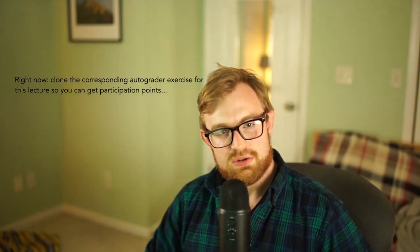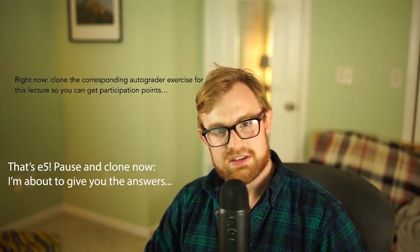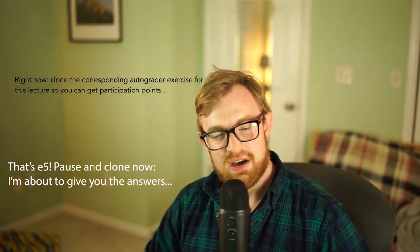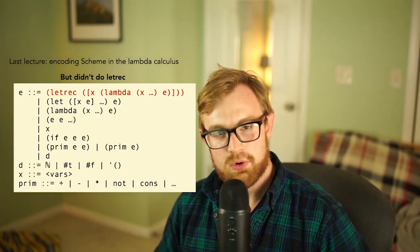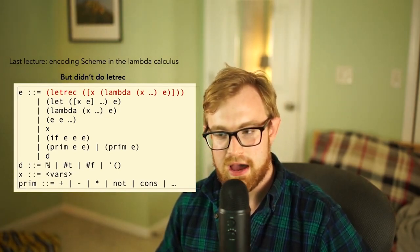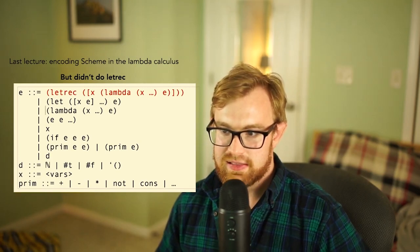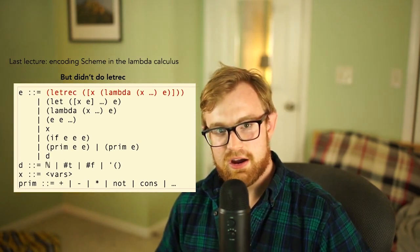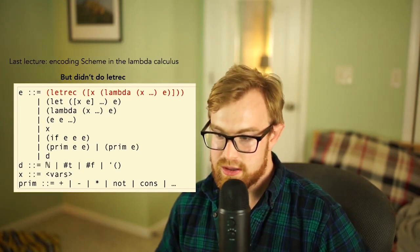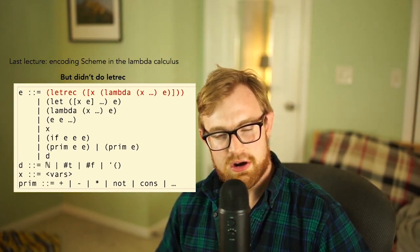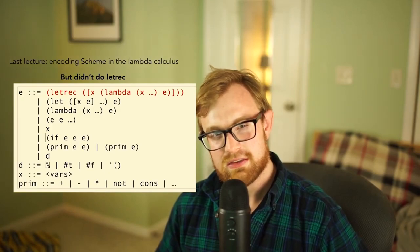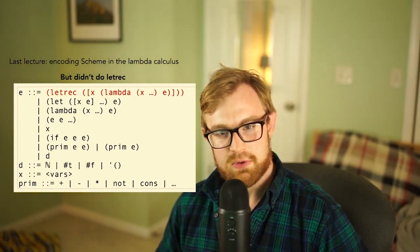You should pull the corresponding exercise right now. We talked about how to encode most forms of Scheme into the lambda calculus: let was a left-left lambda where you take a lambda and immediately apply it for all the body expressions. Lambdas become themselves, except multi-argument cases get curried. Variables just become themselves. If gets encoded according to the structure we talked about last time. But the one thing I didn't show you was letrec, which allows us to construct recursive loops.